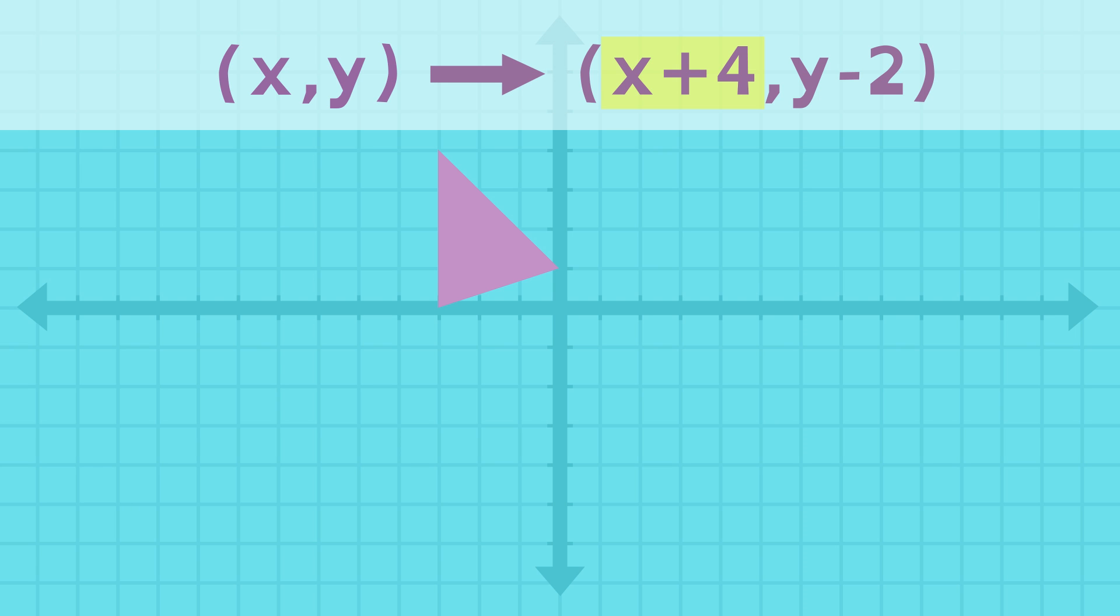If we move positive 4 on the x-axis, then we know to move the shape 4 to the right. And if we use negative 2 on the y-axis, then we know to move the shape 2 down on the coordinate plane.